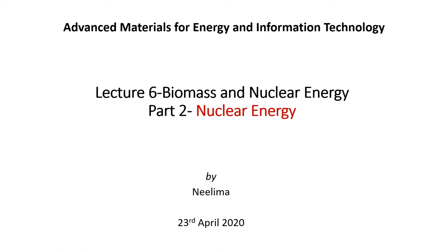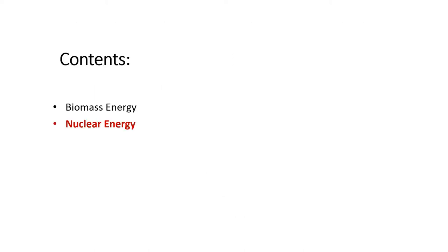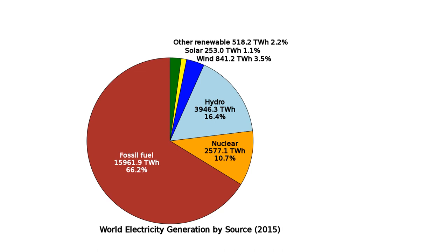Here is the second part of lecture 6. In this lecture we shall discuss about nuclear energy. Here is a pie chart showing electricity generation by source recorded in the year 2015. The different sources producing energy for human consumption show that fossil fuels top the chart, followed by hydro, and then nuclear. Nuclear energy shares 10.7% of the total energy production.